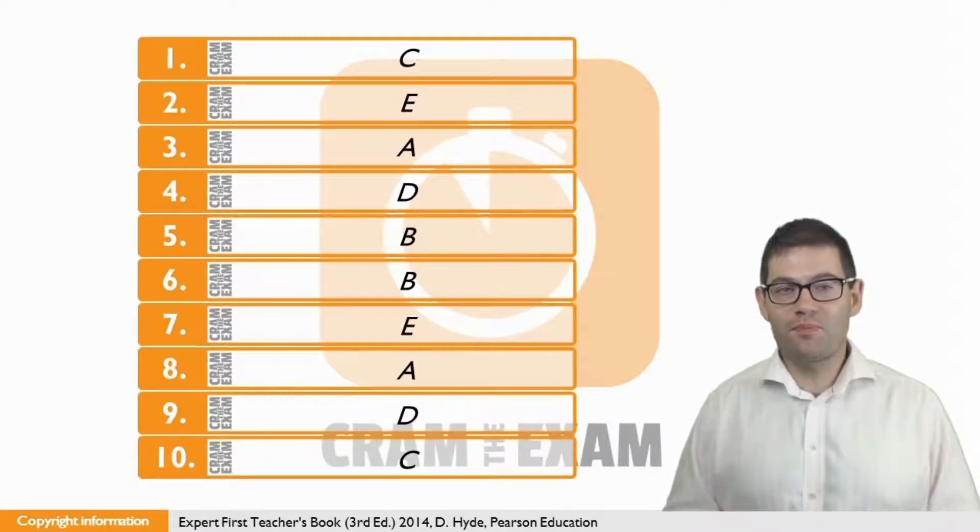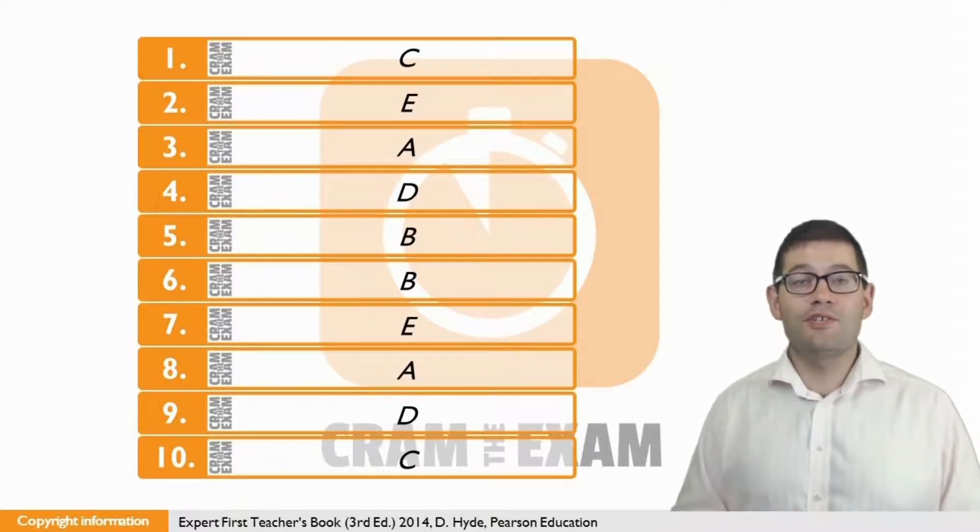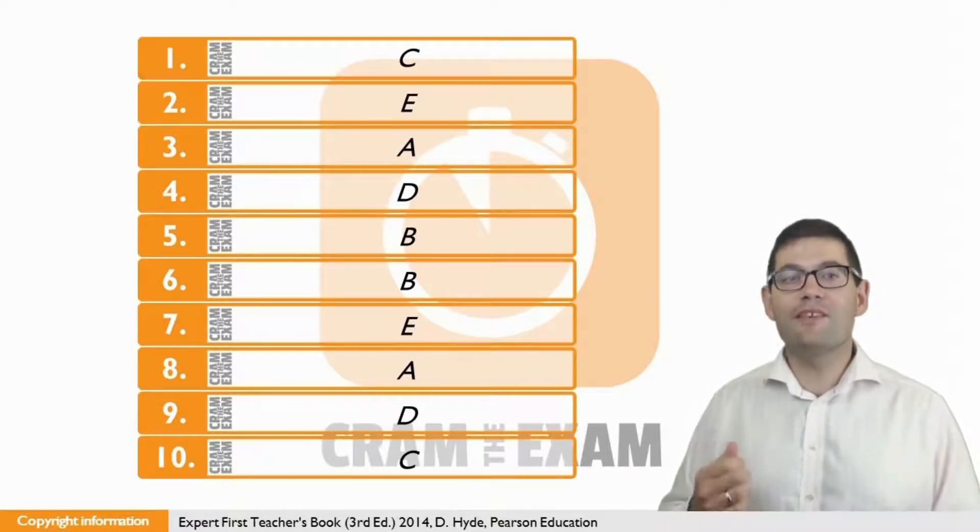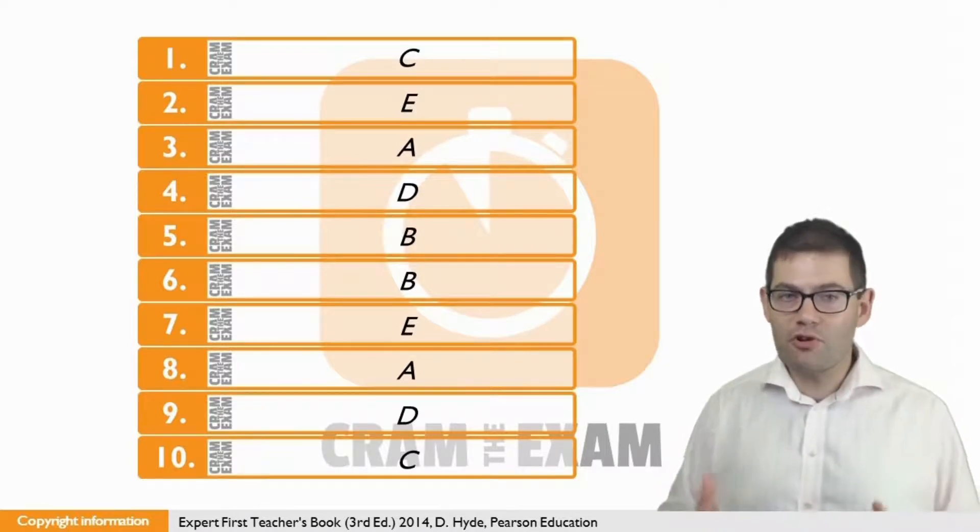For question five, the answer is B, Yvette. The doubts which are raised in the question text are found at the end of B, when Yvette says that possibly too much money is being spent on bureaucracy instead of sending it to the people in need.